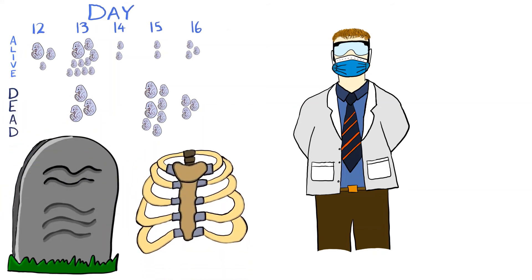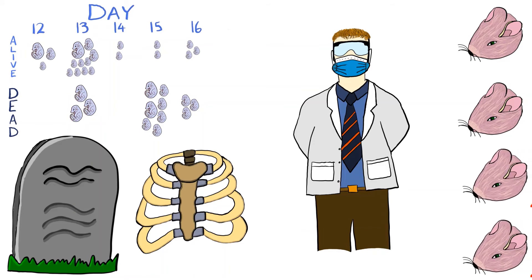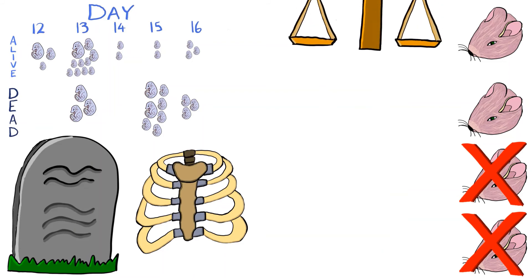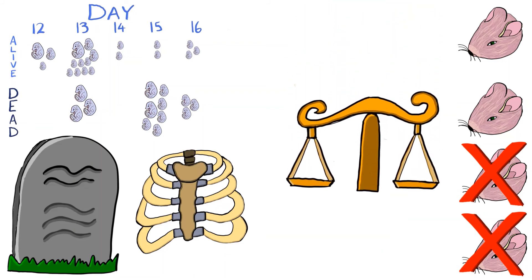GG chimeras had better luck developing to term, with two mice actually living to become healthy and fertile. However, the other two GG chimeras died around birth. This death and deformity of chimeras confirmed that a balance of maternally and paternally imprinted genes is essential to healthy development.